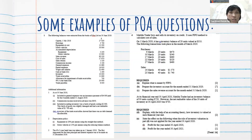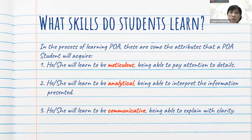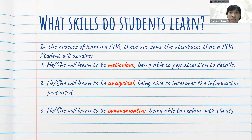So, you have seen some examples of POA questions. What skills do POA students learn? POA students will learn to be meticulous, as they are required to pay attention to details. POA students will learn to be analytical, as they are required to integrate the information presented to them. POA students will learn to be communicative, as they are required to explain their answers with clarity.